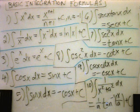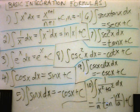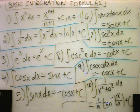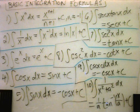Number 8 says if you integrate cosecant squared, you get negative cotangent of x. Number 9 says if you integrate cosecant of x cotangent of x,